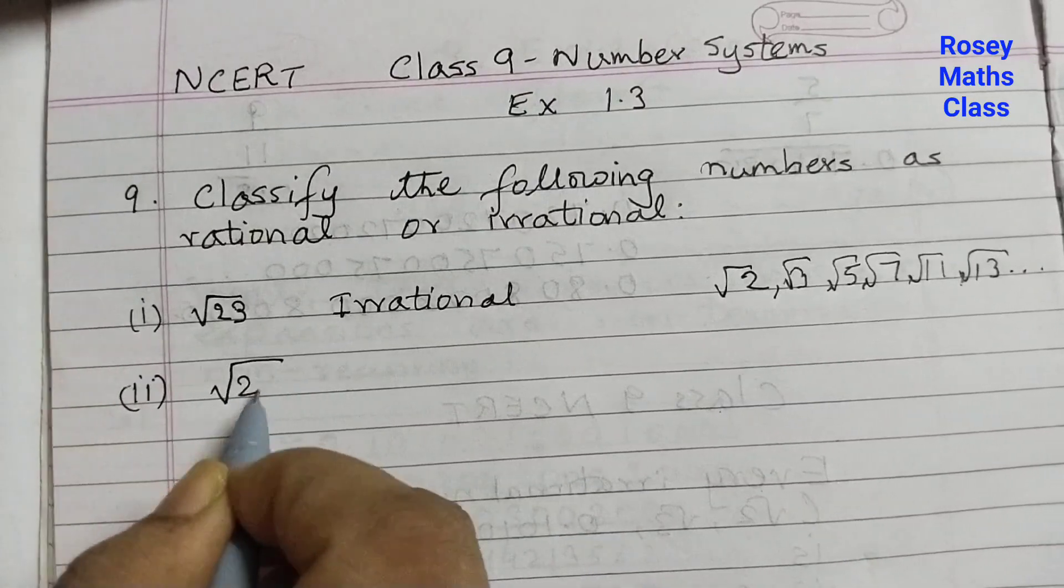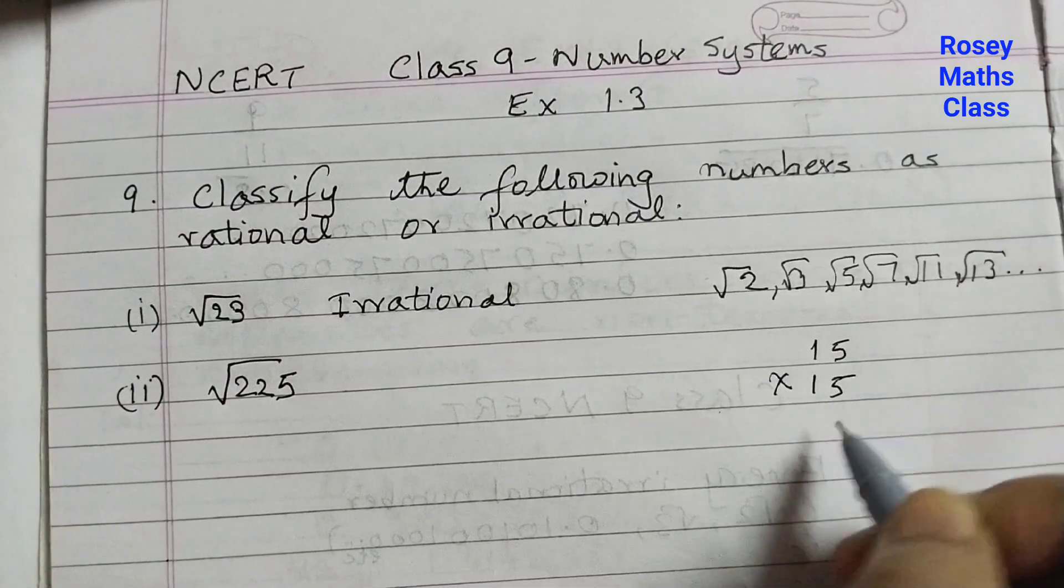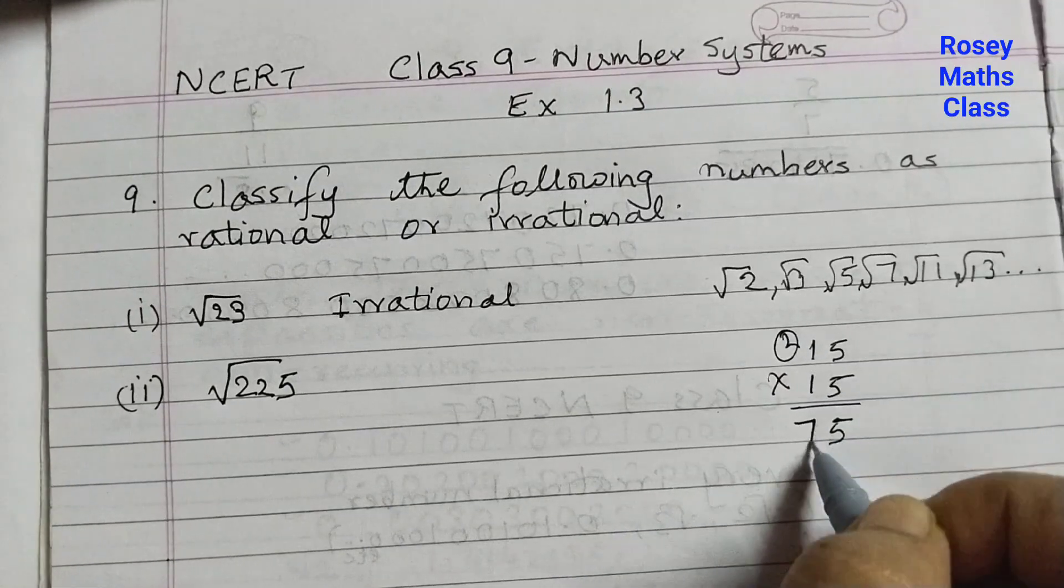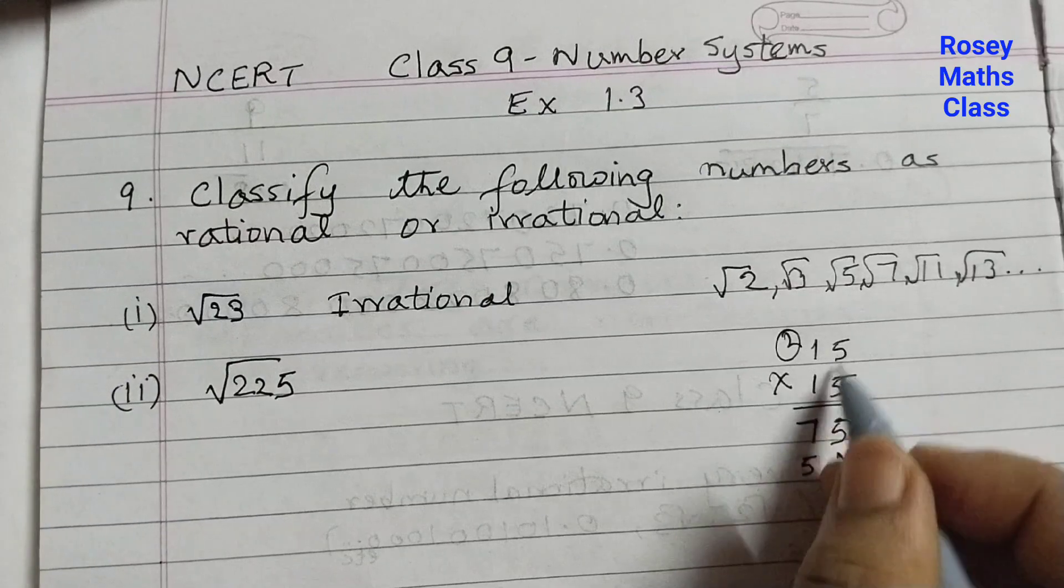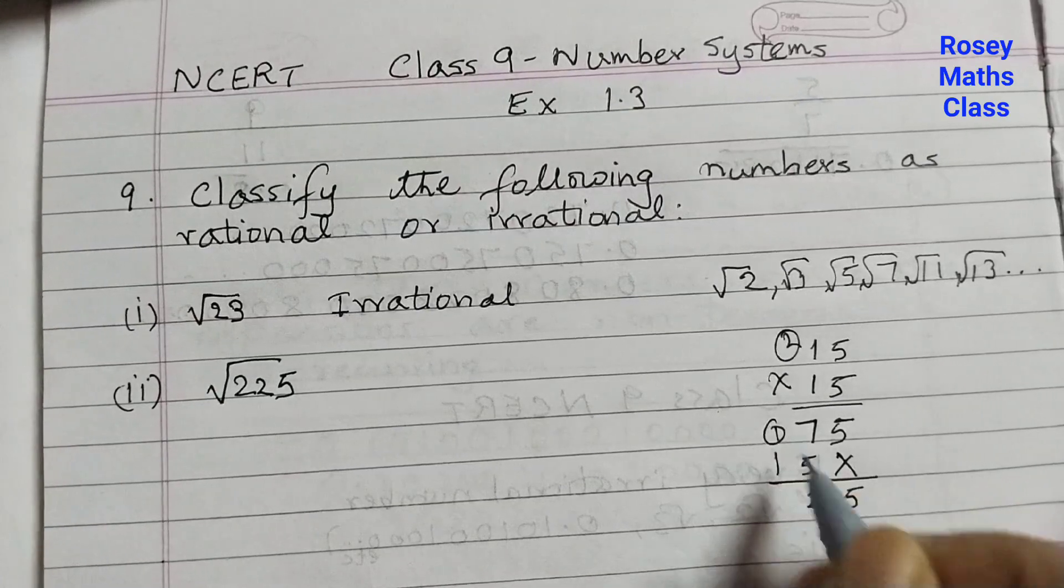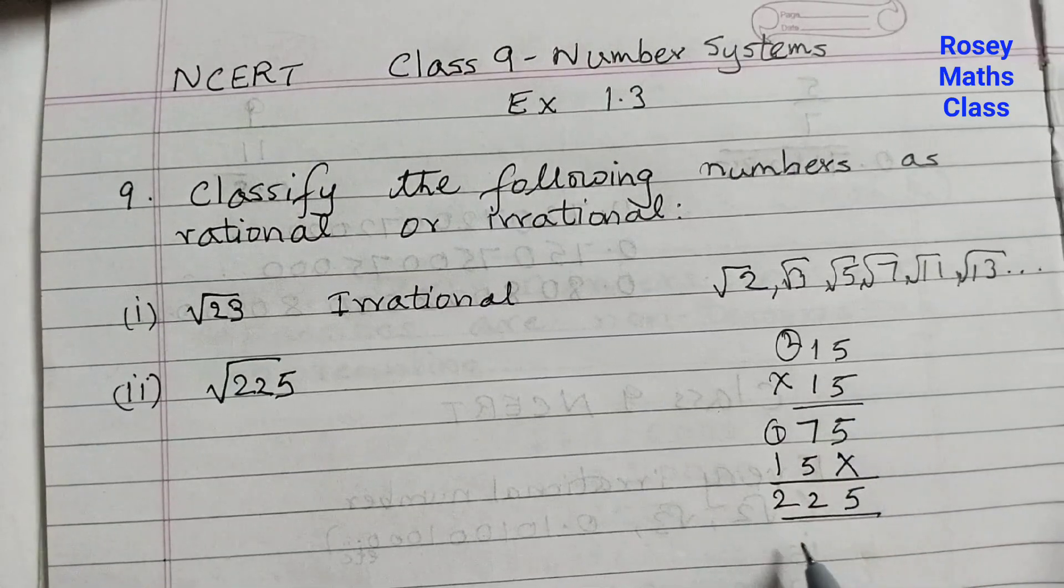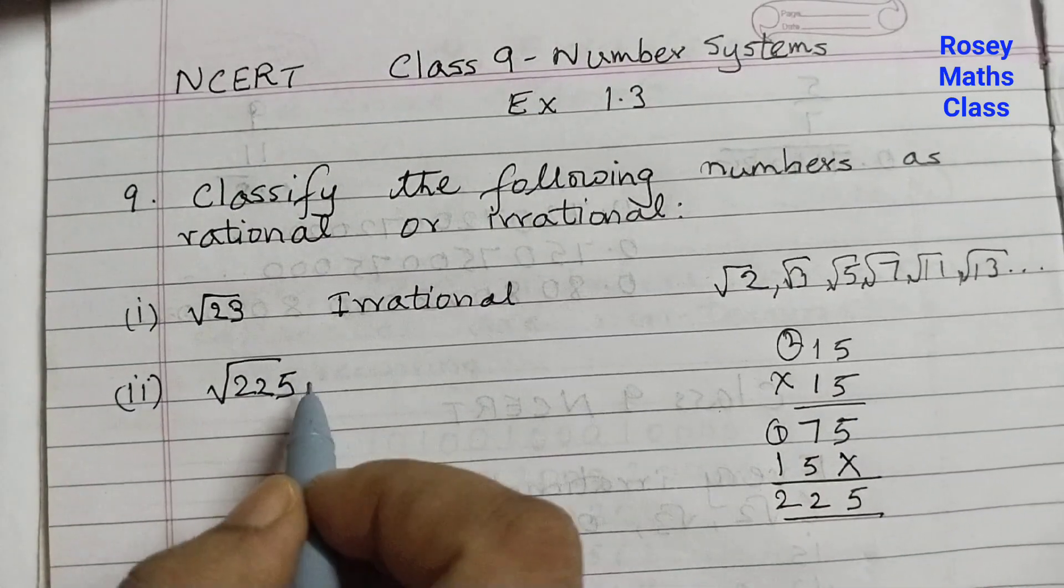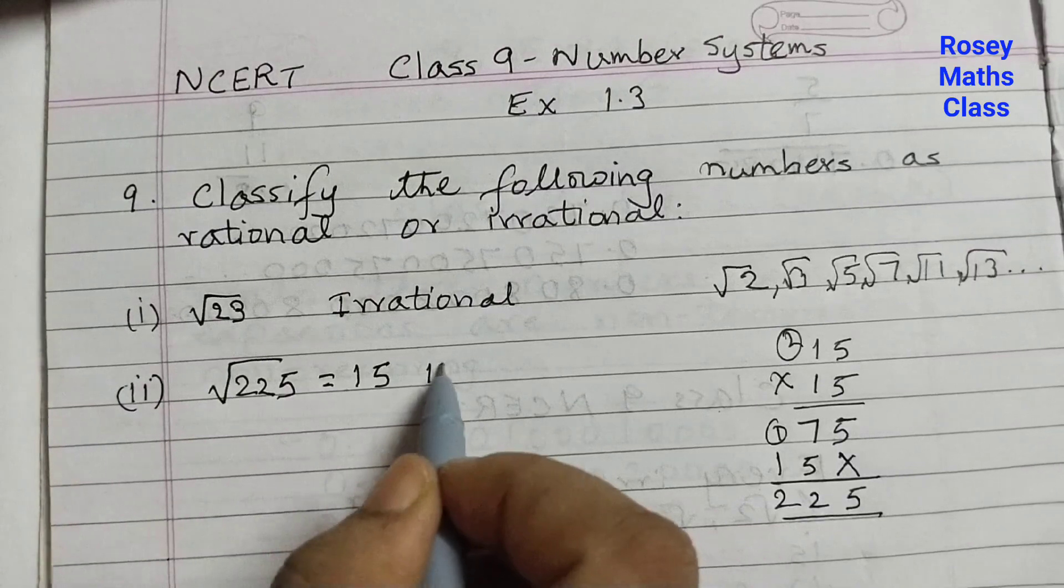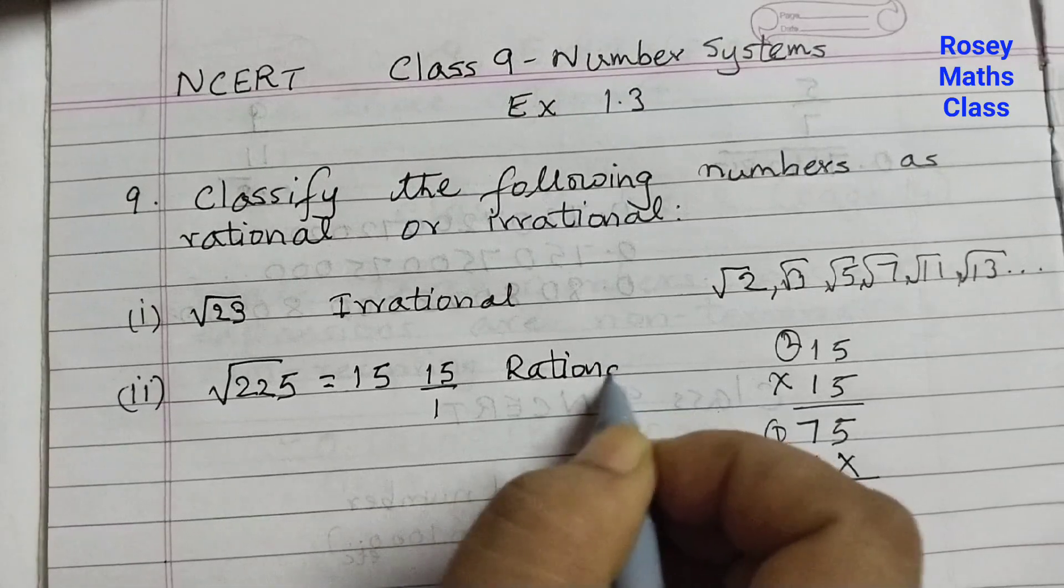Second one, square root of 225. Now 15 into 15, if we do 5 times 5 is 25, 5 ones are 5, 5 ones are 5, 1 times 1 is 1, so 7 plus 5 is 12, carry over 2. So when we multiply 15 by 15, square root of 225 is equal to 15. 15 is a rational number because we can write this as 15 by 1 in p by q form. So this is a rational number.